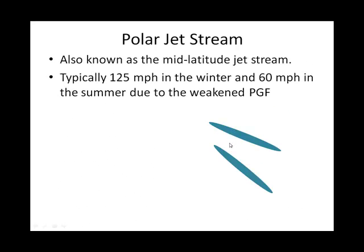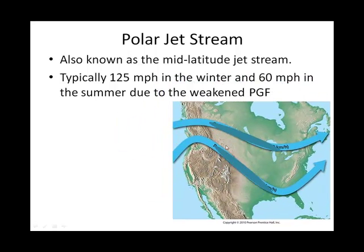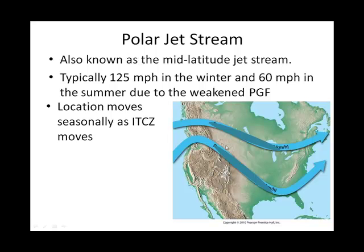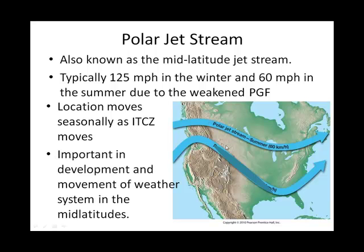Looking at the polar jet stream, it is the most important, and it wanders seasonally. In the winter it's stronger, and in the summer it's weaker. Here's the location generally in the summertime of the polar jet stream, and here it is in the wintertime — which seems pretty far south. If we are located around here, we can definitely be influenced by the polar jet stream. It can help bring down cold air and bring up warm air.